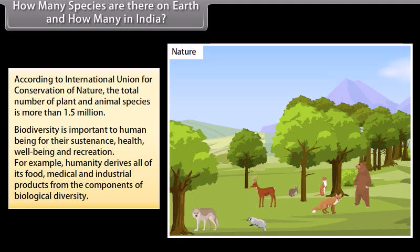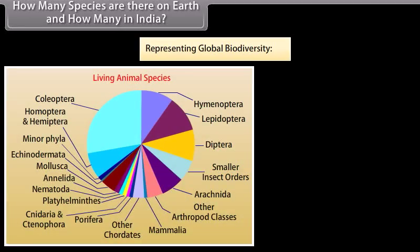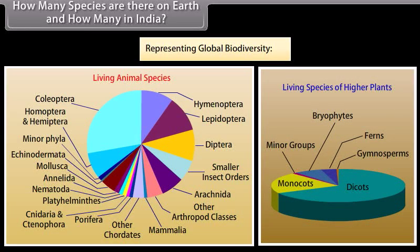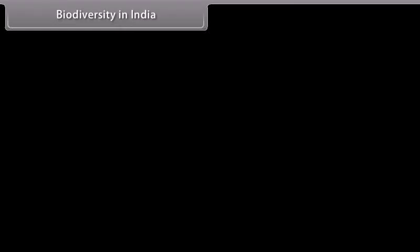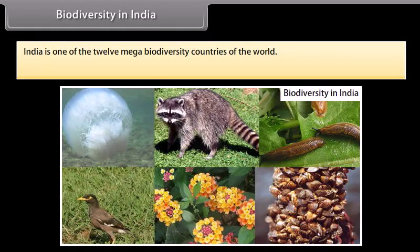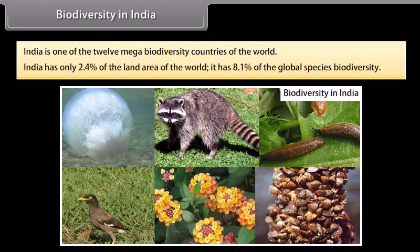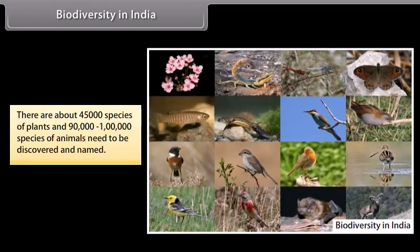well-being and recreation. For example, humanity derives all of its food, medical and industrial products from the components of biological diversity. Here is a pie graph representing global biodiversity. India is one of the 12 mega biodiversity countries of the world. India has only 2.4% of the land area of the world, yet it has 8.1% of the global species biodiversity. There are about 45,000 species of plants and 90,000 to 1,000,000 species of animals yet to be discovered and named.